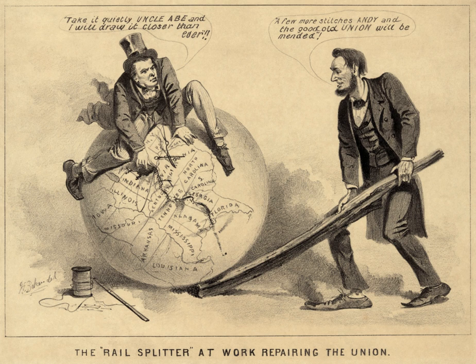The Thirteenth Amendment, proposed in 1864 and ratified in 1865, abolished slavery and involuntary servitude, except for those duly convicted of a crime. The Fourteenth Amendment, proposed in 1866 and ratified in 1868, addresses citizenship rights and equal protection of the laws for all persons.